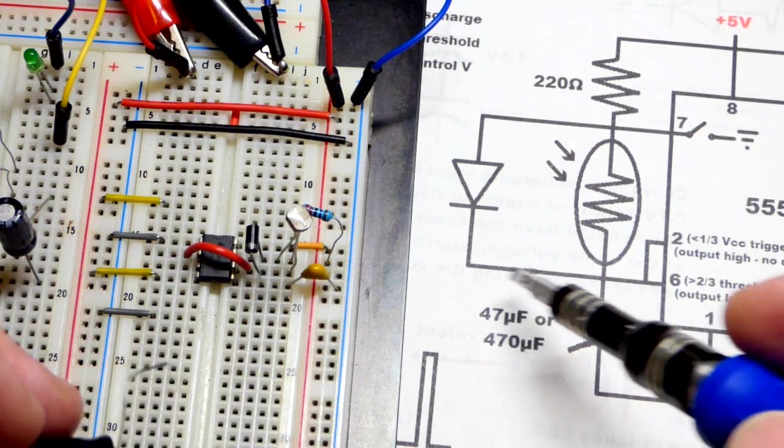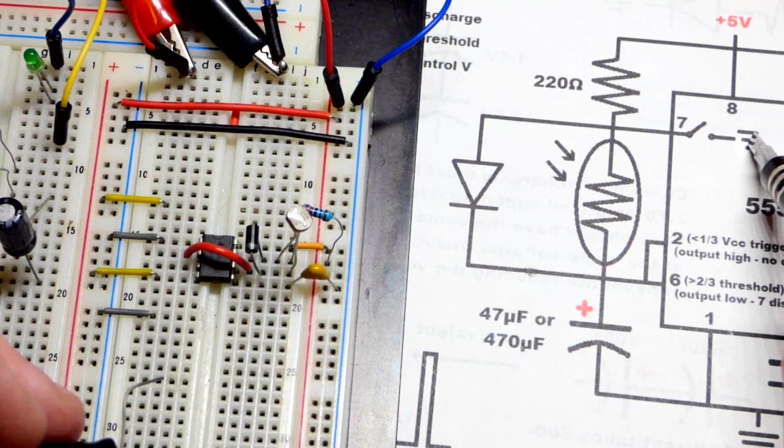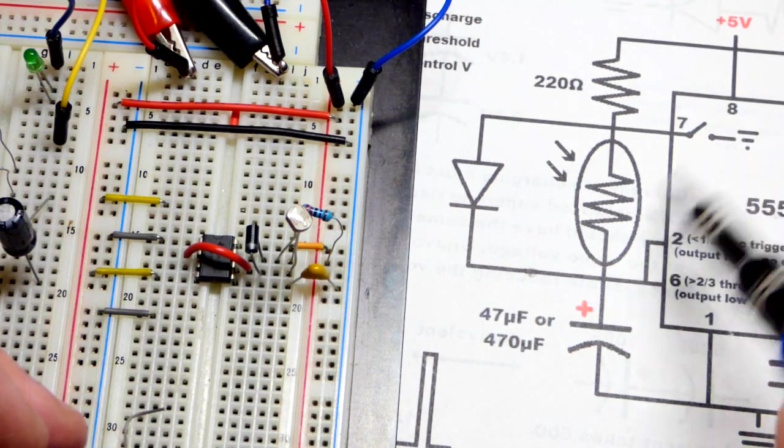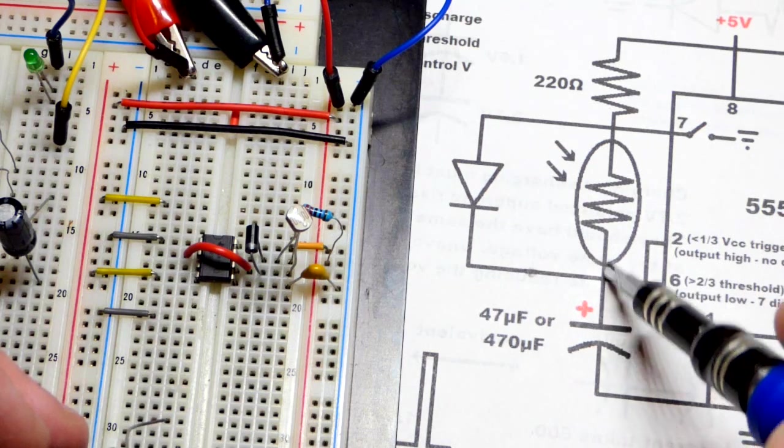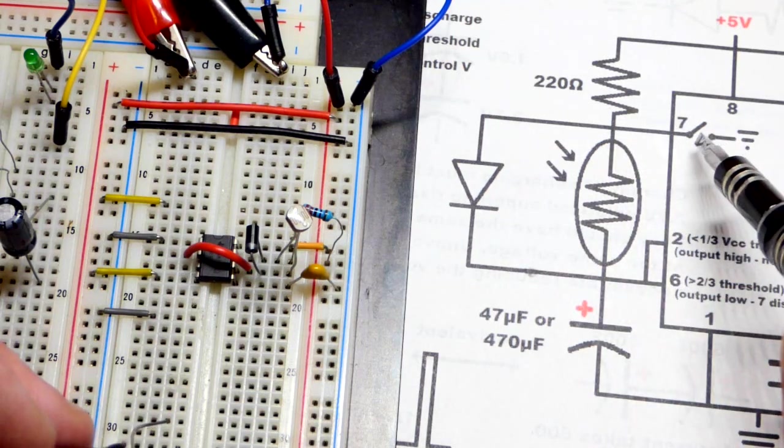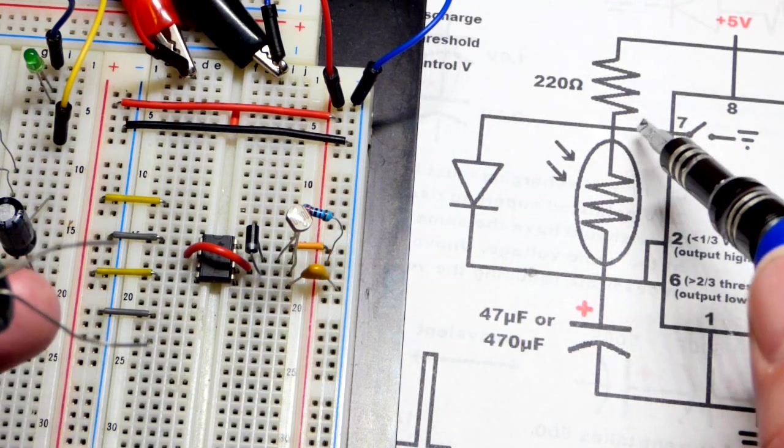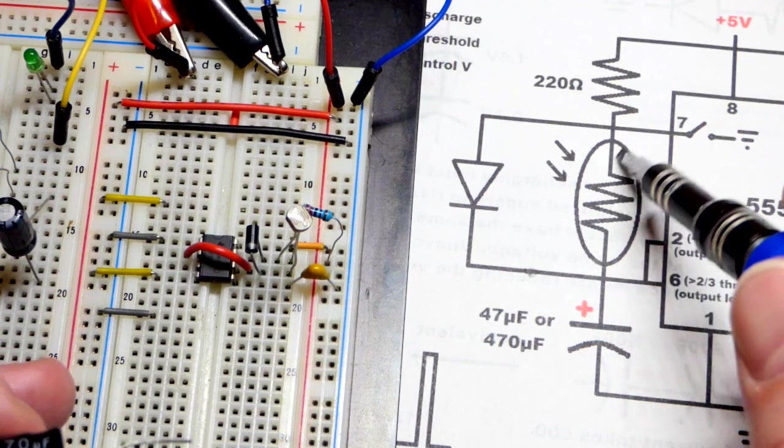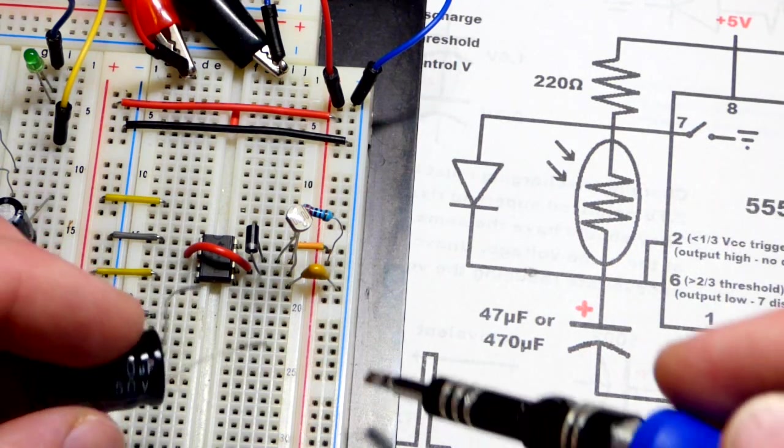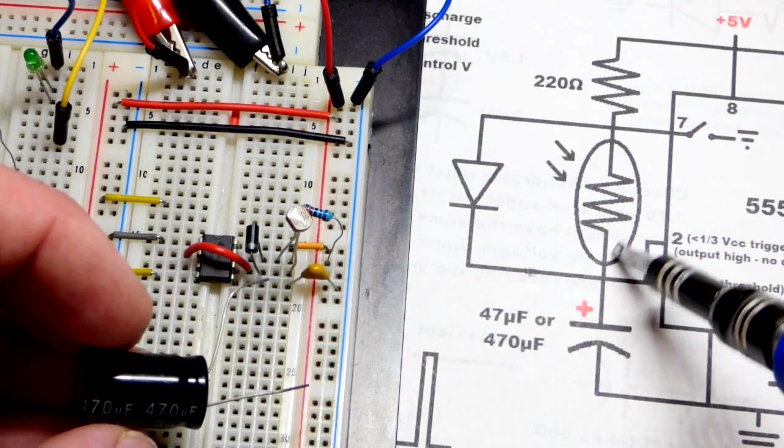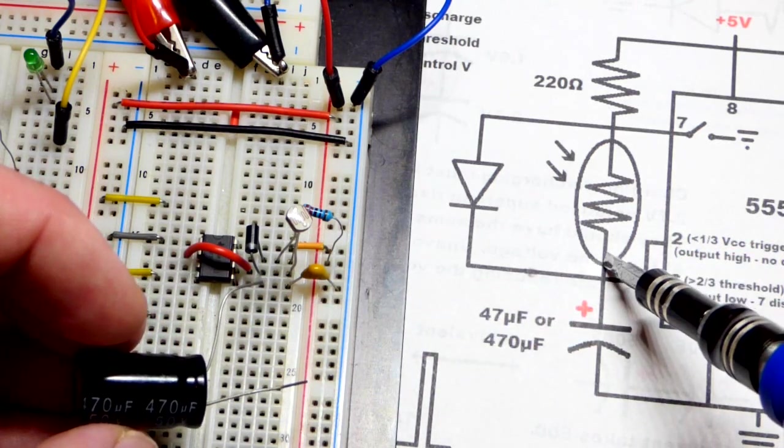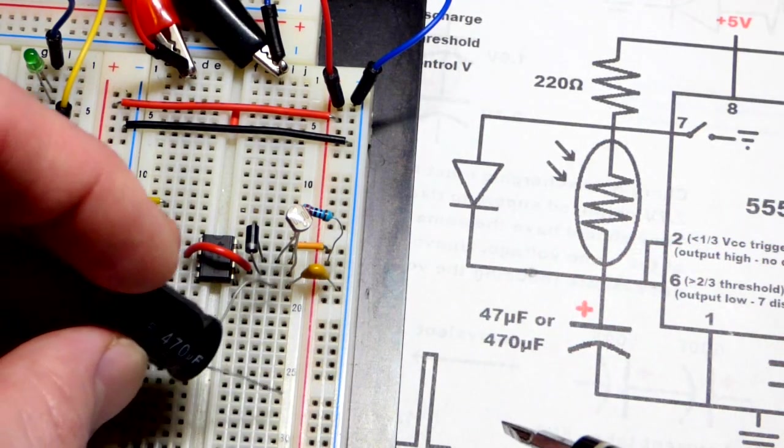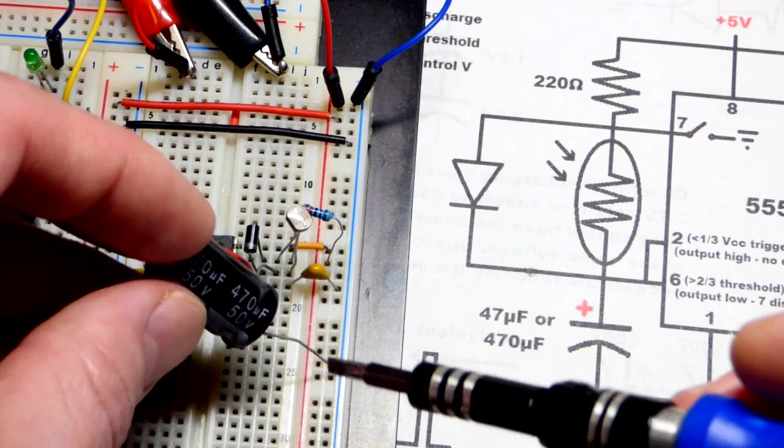When the capacitor discharges, it cannot discharge that way. You can see we got the discharge pin going to ground. It can't go through that way, so it has to go through the light dependent resistor. So the light dependent resistor is actually only really determining how long it takes the capacitor to discharge.